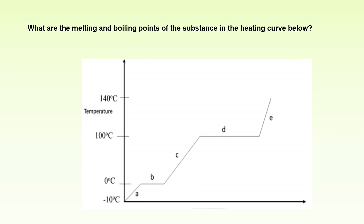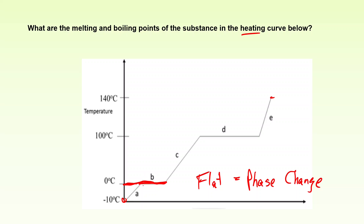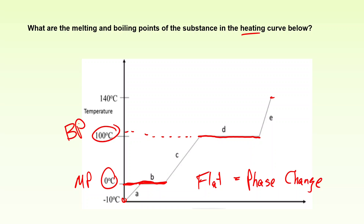Example problem: What are the melting and boiling points of the substance in the heating curve? We can tell it's a heating curve because it starts at a low temperature and ends at a high temperature. Here's a flat region — the temperature isn't changing because it's going through a phase change. Since we're starting at a really low temperature, we're starting as a solid, so this is the melting point: 0 degrees Celsius. And here in section D there's another flat section at 100 degrees Celsius — that is the boiling point.